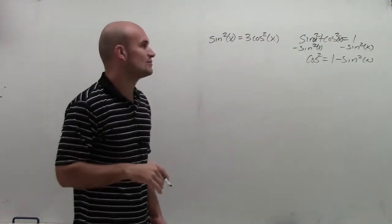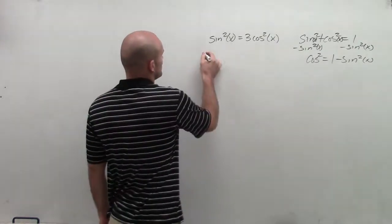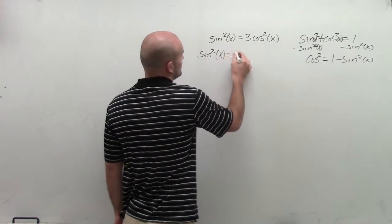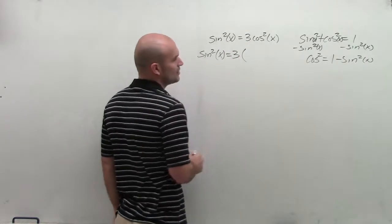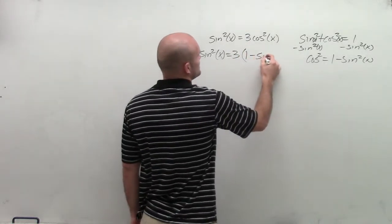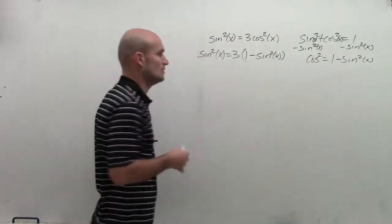So therefore, I can say cosine squared equals 1 minus sine squared. So let's go and represent that here. So I have sine squared of x equals 3. But rather than multiplying by cosine, let's multiply by 1 minus sine squared of x.